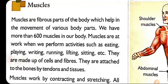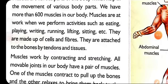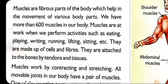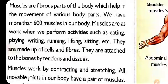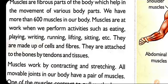Muscles are the fibrous parts of our body — they are like thread-like structures which help in the movement of the various body parts. The total number of muscles present in our body is more than 600 muscles. Muscles account for almost half of the body weight — like if your weight is 30 kg, about 15 kg of weight is due to the muscles.